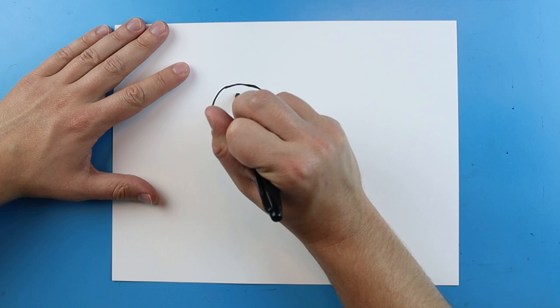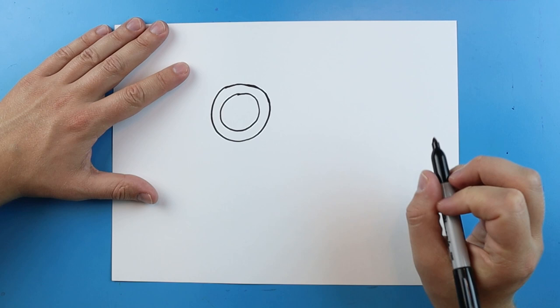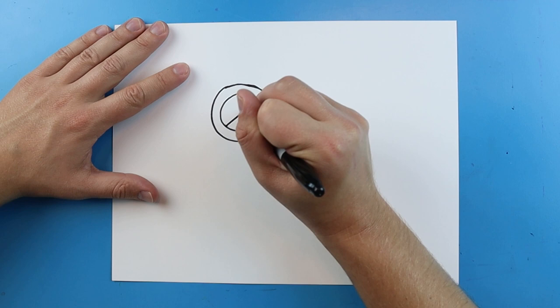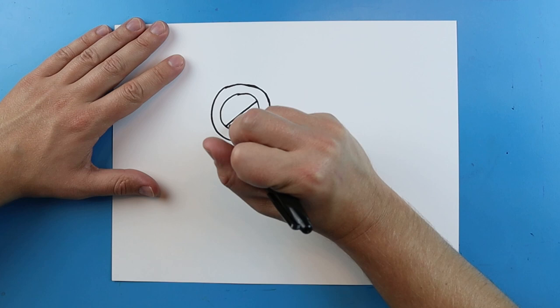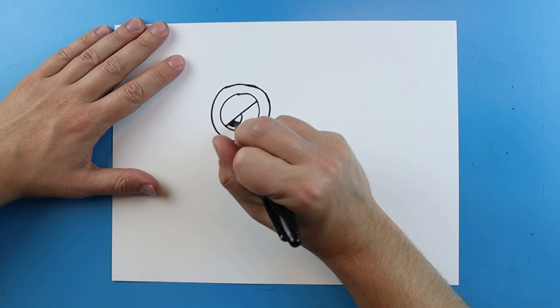Now inside of here we want to draw another really big circle, so I'm just going to draw another big circle right inside of here. Then I'm going to draw a little line that just goes right across here at a diagonal. And then right here we're just going to draw a little smiley face and we can color this in.